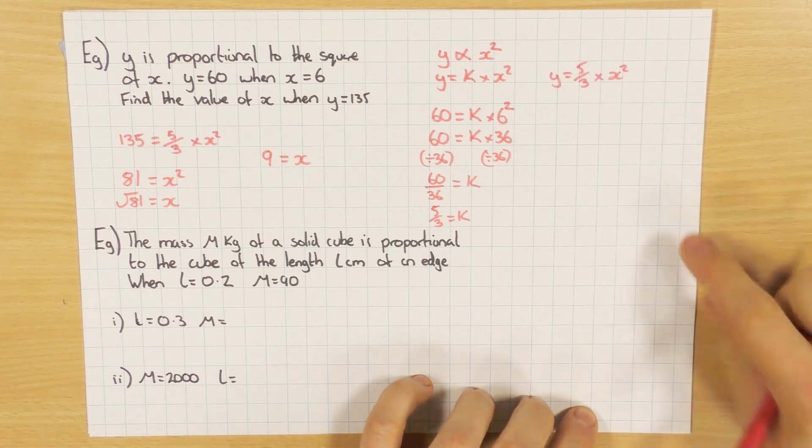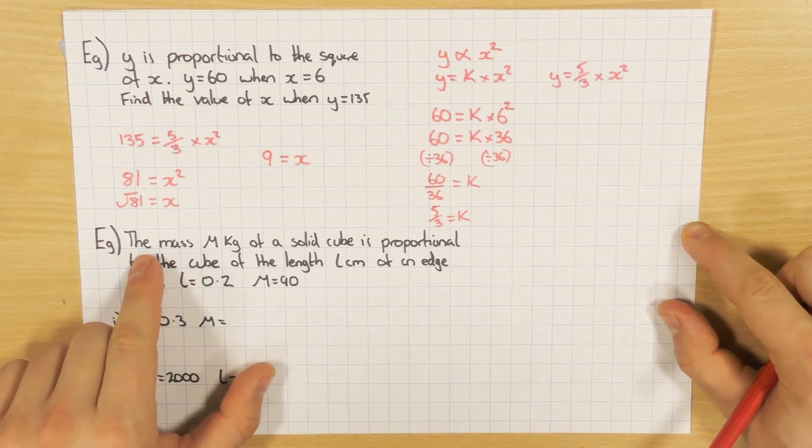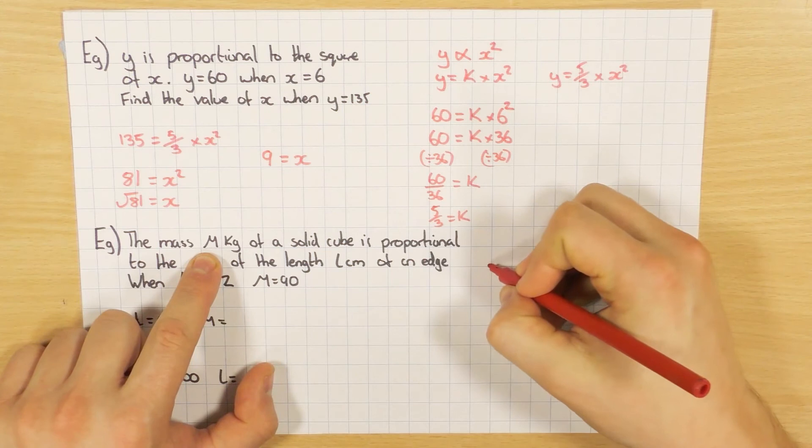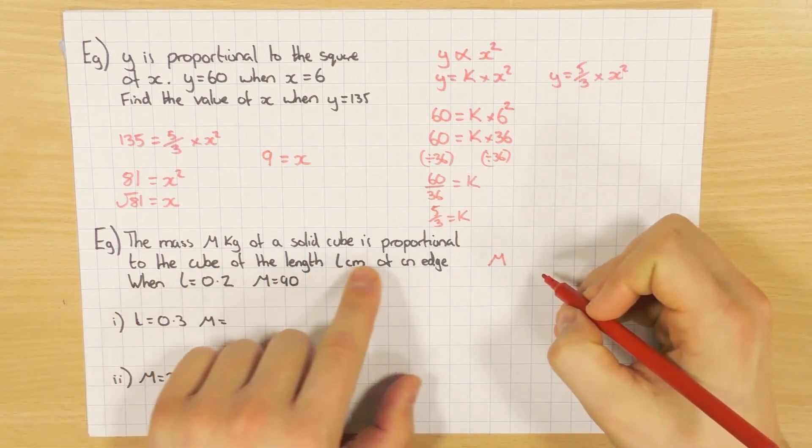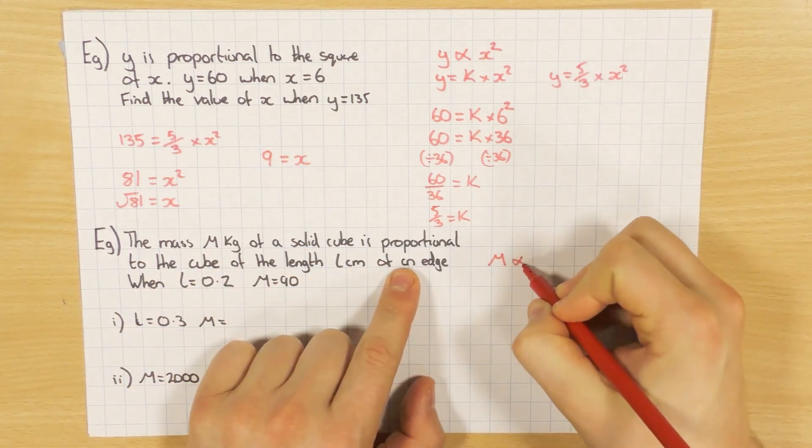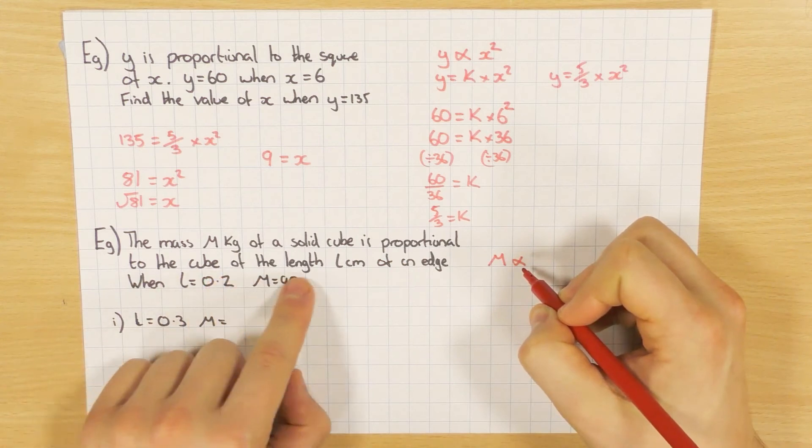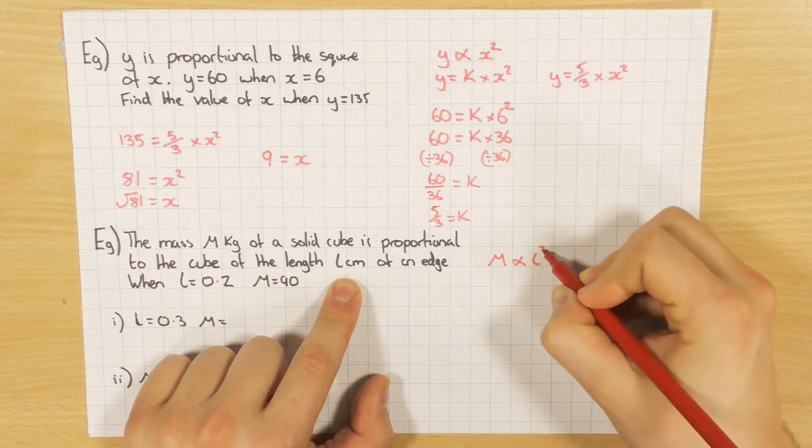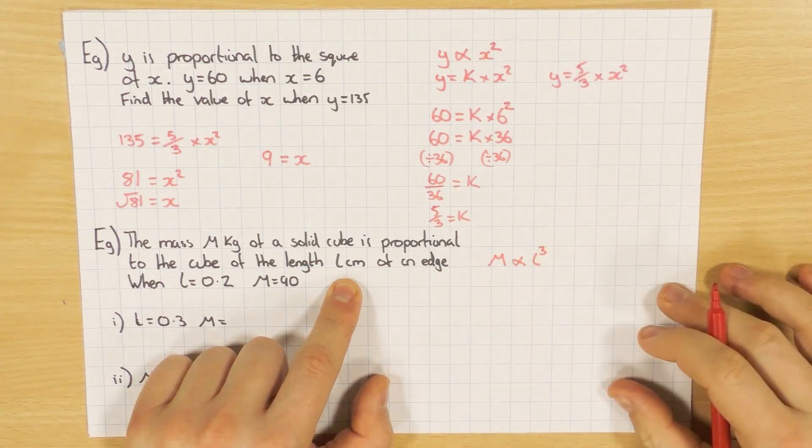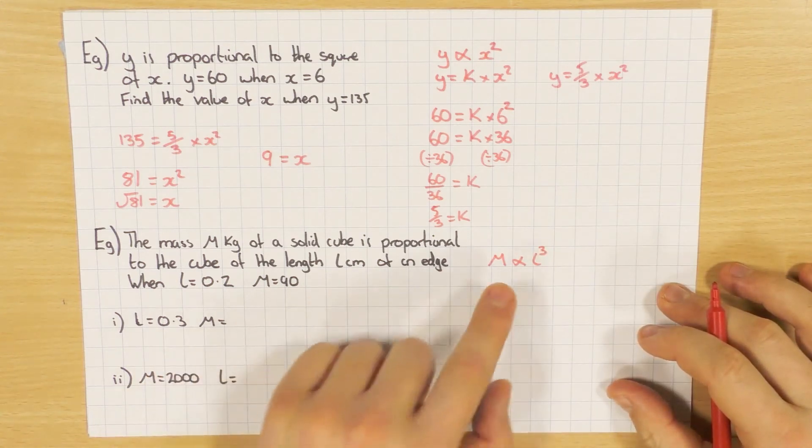Cool. Let's have a look at the next one. The mass m, so we've got an m, is proportional to the cube of the length l. So this one here is the cube. So it's l cubed. So again, just read the question. Make sure you set this bit up correct. If this bit is wrong, everything else, no matter how good it is, will also be wrong.